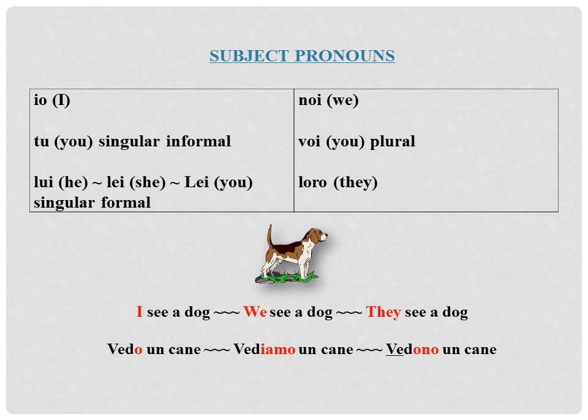Now let's talk about the subject pronouns in Italian. Their English equivalents are in parentheses. Io means I — note that io is not capitalized unless it is the first word of a sentence. Tu means you, singular, informal. The concept of formal versus informal will be discussed in greater detail in the following slide. Lui means he.